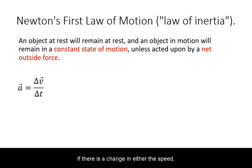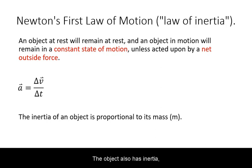If there is a change in either the speed or direction of an object, it is undergoing acceleration. By Newton's first law, it means a net outside force must be acting on it. The object also has inertia, which is its tendency to keep constant velocity. The inertia of an object is proportional to its property of mass.